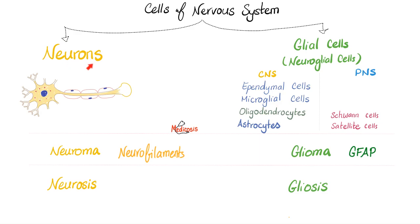Adding '-osis' to neurons gives neurosis — an old psychology term. Gliosis is a reaction of glial cells to some kind of insult or injury, and it is a very non-specific reaction. You cannot make a specific diagnosis based on gliosis alone.